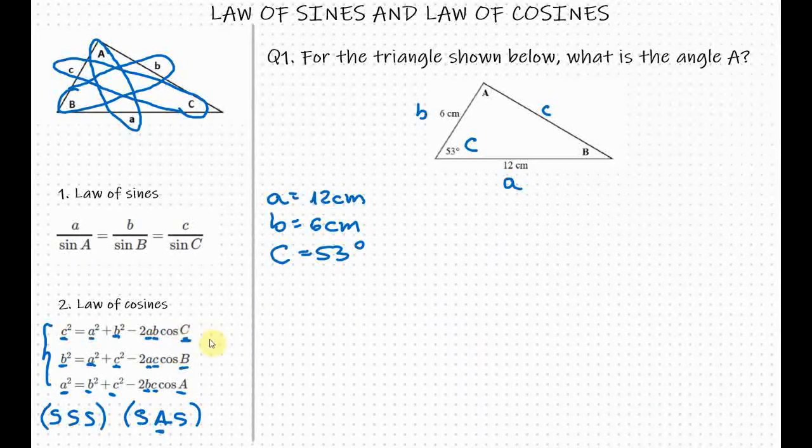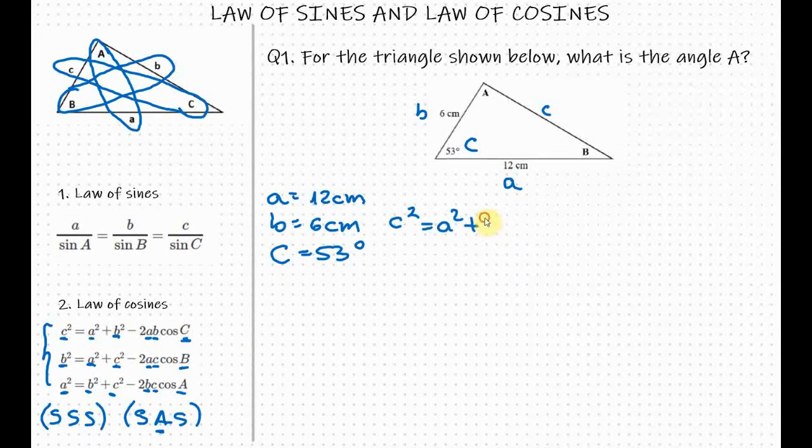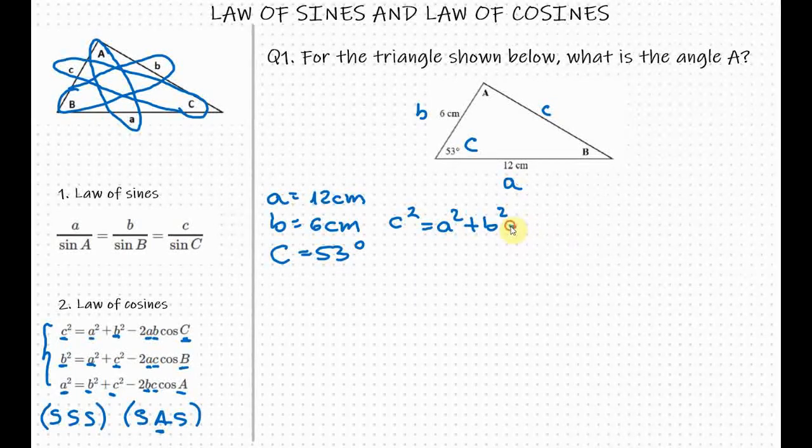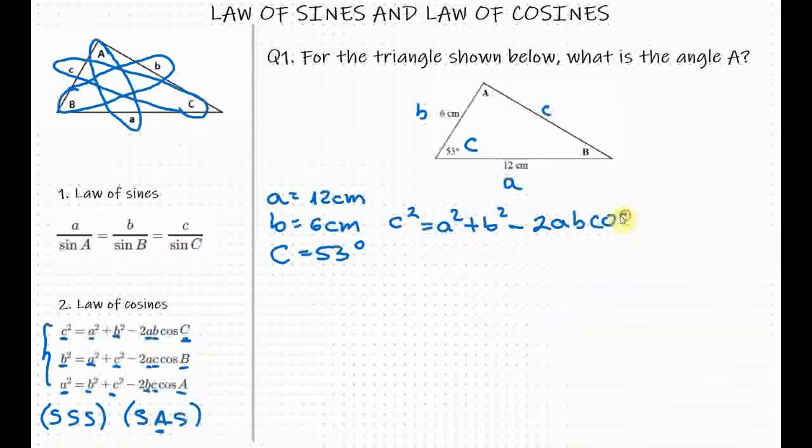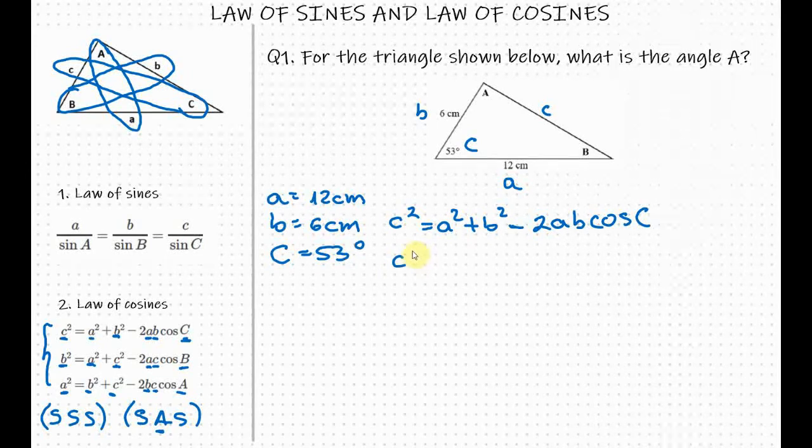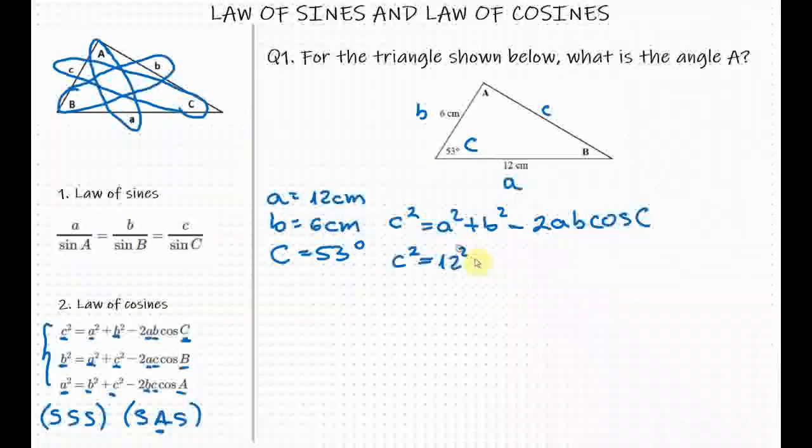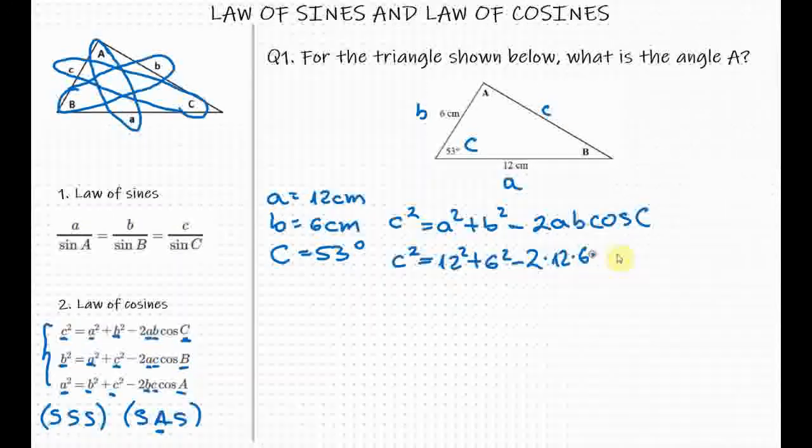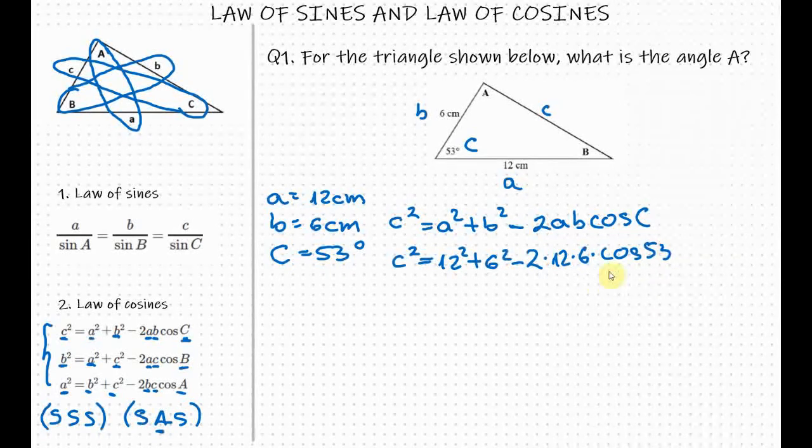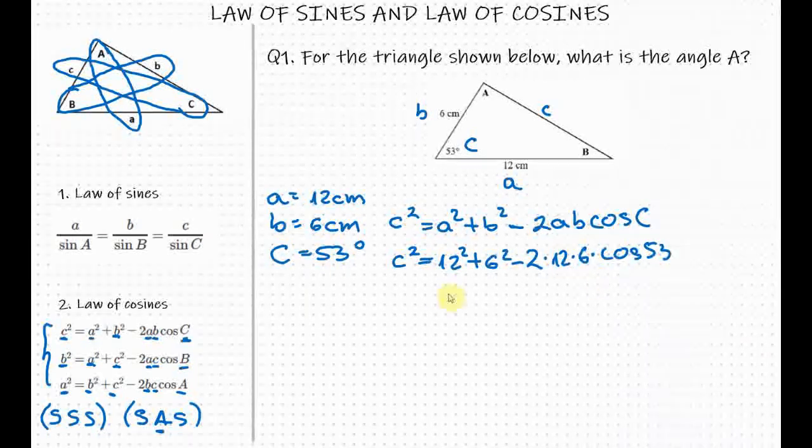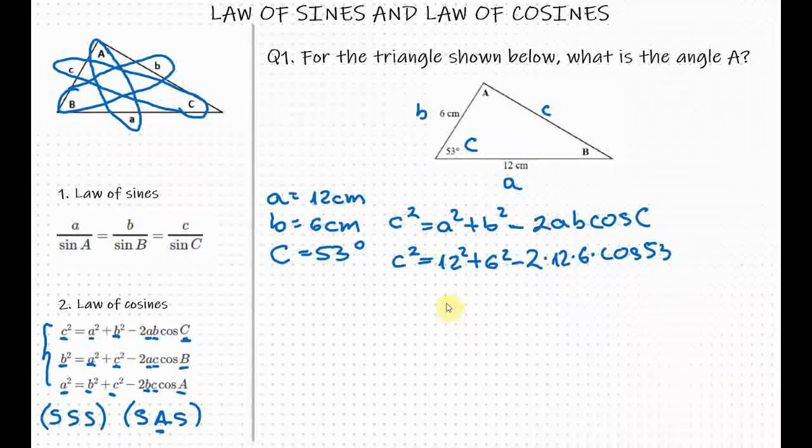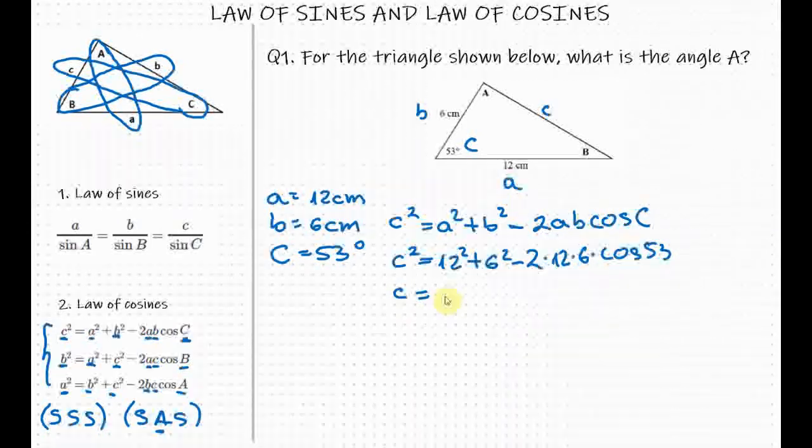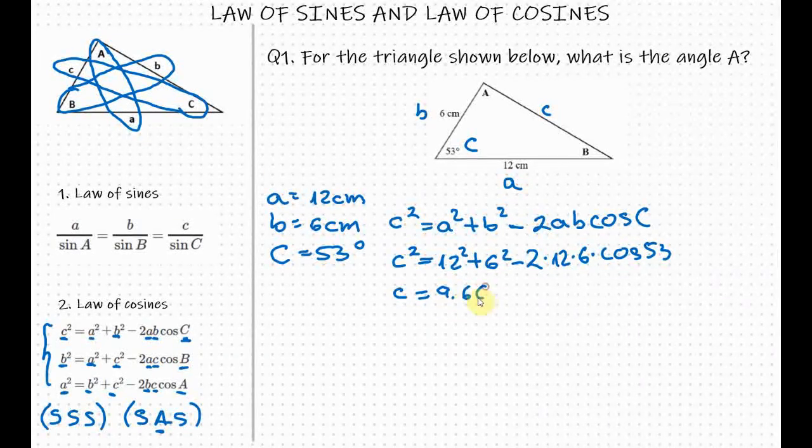Designating the side opposite the angle of 53 degrees as c, I will use the law of cosines to find the side length c. So c squared equals to a squared plus b squared minus 2 times a times b cosine C. So c squared equals to 12 squared plus 6 squared minus 2 times 12 times 6 times cosine of 53. Now if we plug this everything in our calculator, making sure that we use degrees, we'll get a value of 9.66 cm.